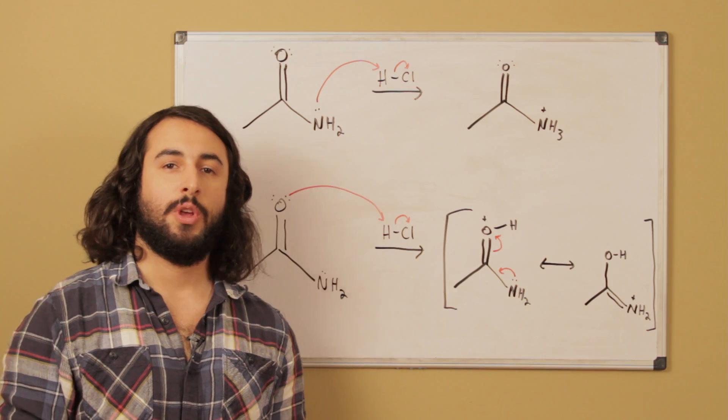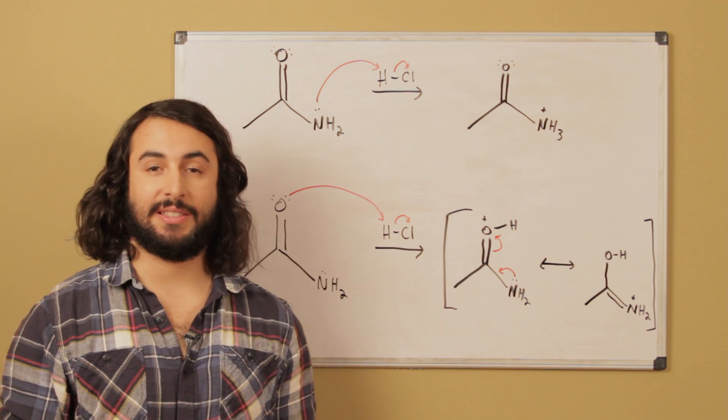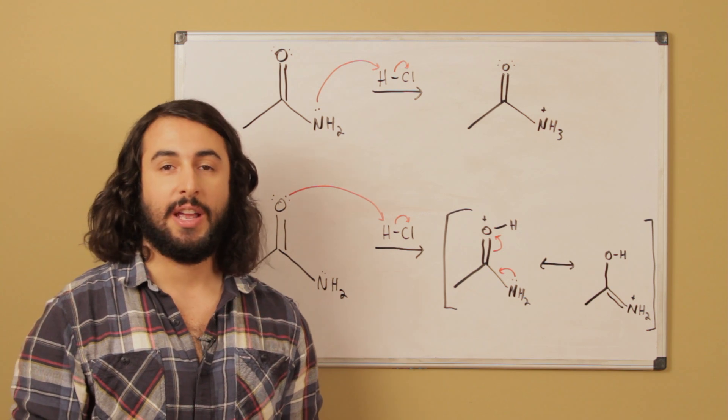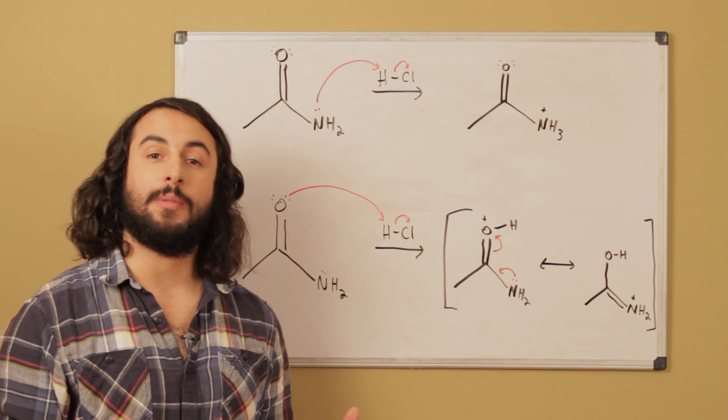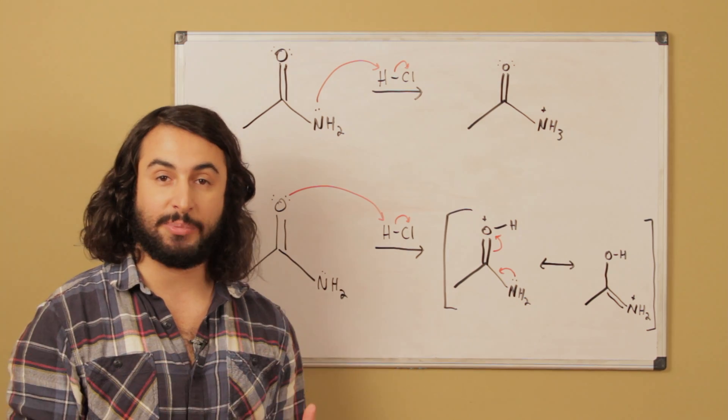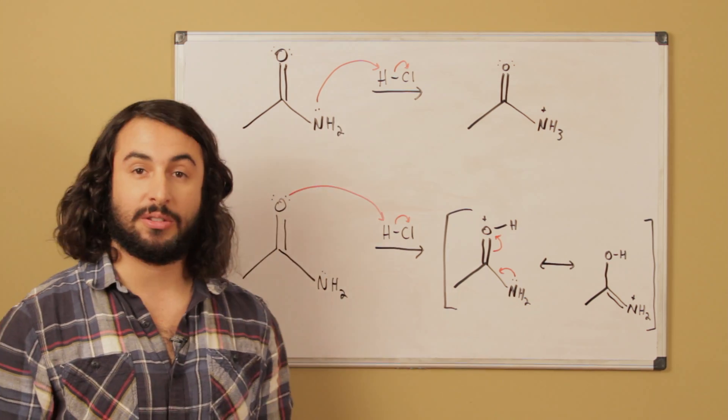Okay guys, so we remember that with Bronsted-Lowry acids and bases, when these kinds of reactions happen, this is about proton transfer. We said that acetamide is a weak base, so if it acts as a Bronsted-Lowry base, it's going to be a proton acceptor, and of course hydrochloric acid, being a strong acid, is a proton donor.